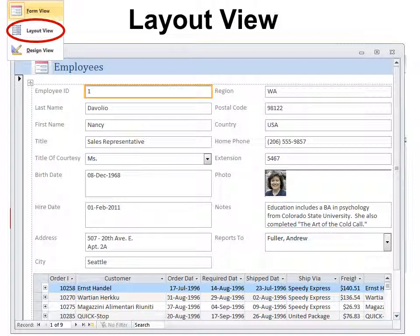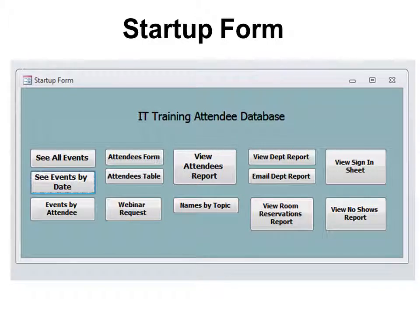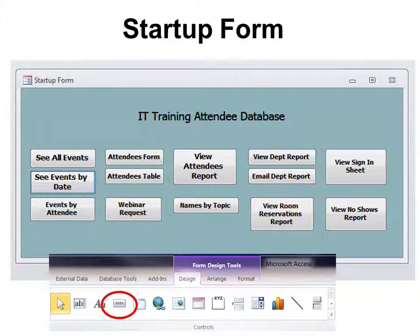Layout View is new in 2010. This allows us to move things around without having to change everything. For example, if I want to move Employee ID so that it's the last field, I can simply click and drag it down here — it has buckets where everything goes. Now this more complex form is a startup form so that when I first come into my database, I can just click the button that allows me to see what I want. You would create it in Design View using the Command Button tool, and you can have it do one event or multiple events by tying it to a macro or to a module.